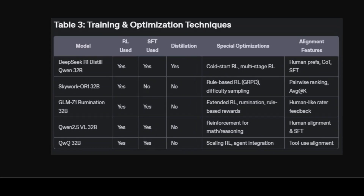Now let's look at training and optimization. This table spotlights what makes each model tick under the hood beyond just data and size. All of these models incorporate reinforcement learning to refine outputs beyond basic supervised learning. DeepSeek R1 Distill is notable for its RL-first cold start approach followed by multi-stage RL and human alignment, specifically for chain-of-thought and reasoning. Skywork OR1 uses a customized tool-based RL system — GRPO — leveraging difficulty-aware sampling, making training more efficient under challenging scenarios. GLM's model is distinguished by deeper ruminative RL cycles guided by multi-level reward functions and strong feedback loops simulating research-grade thinking.